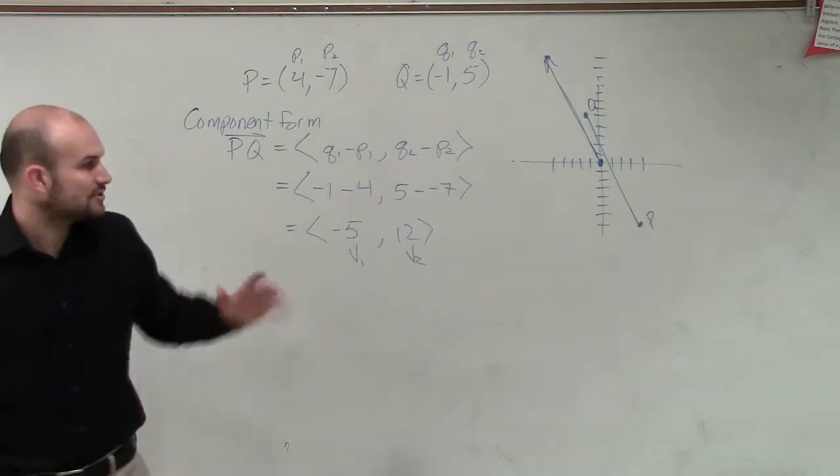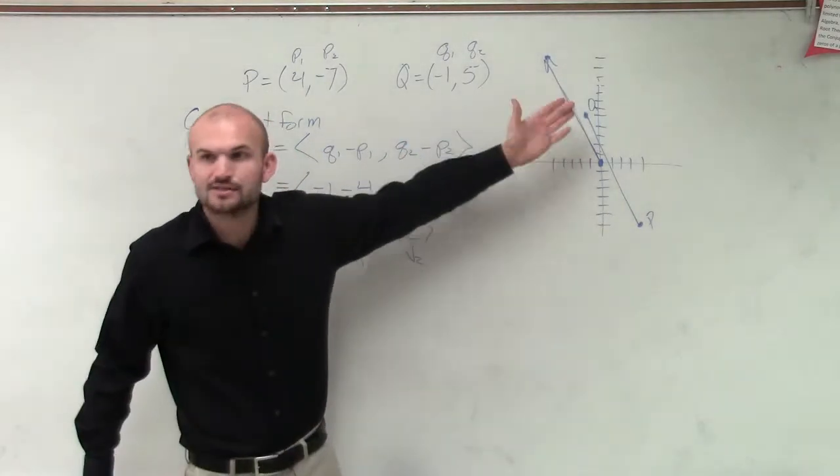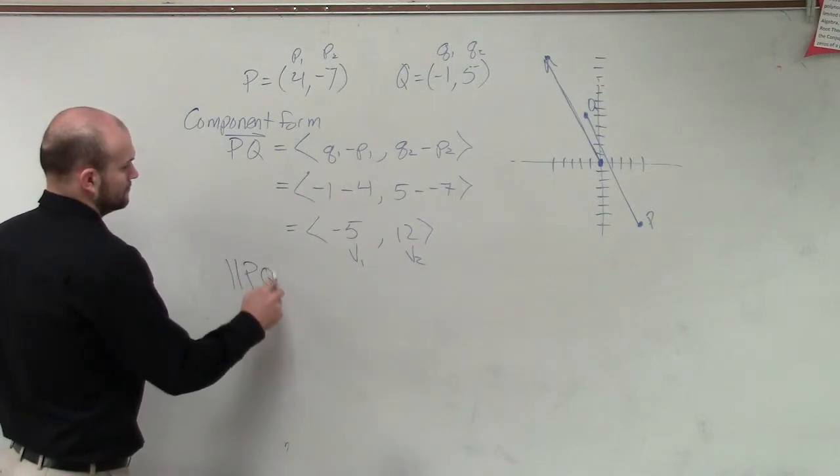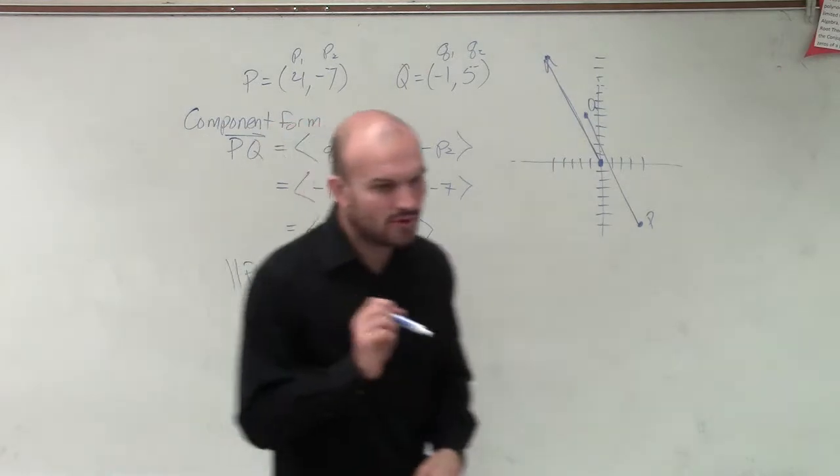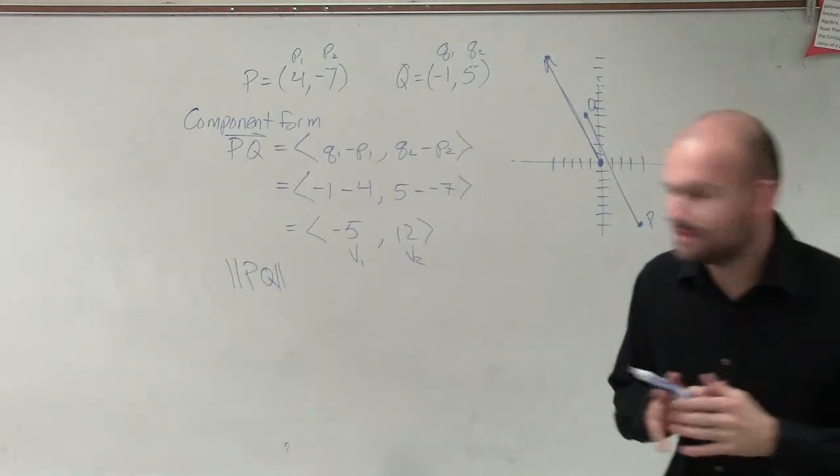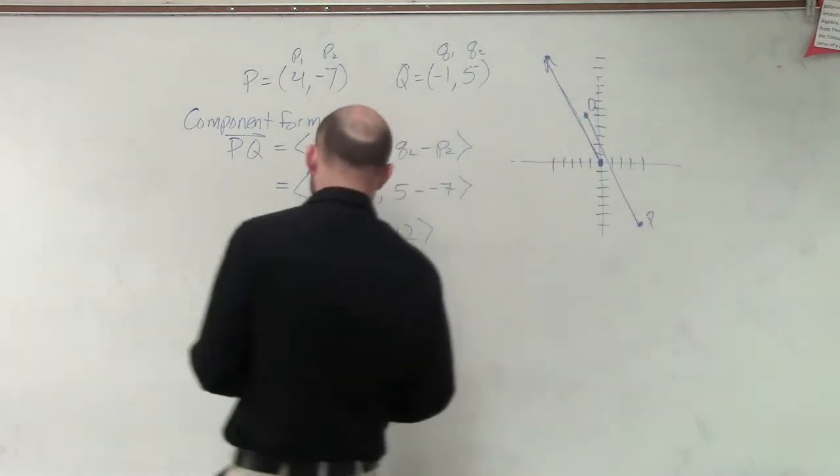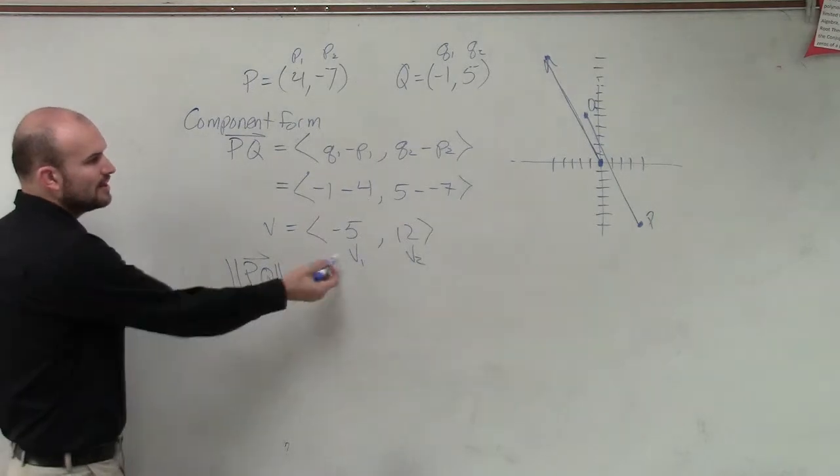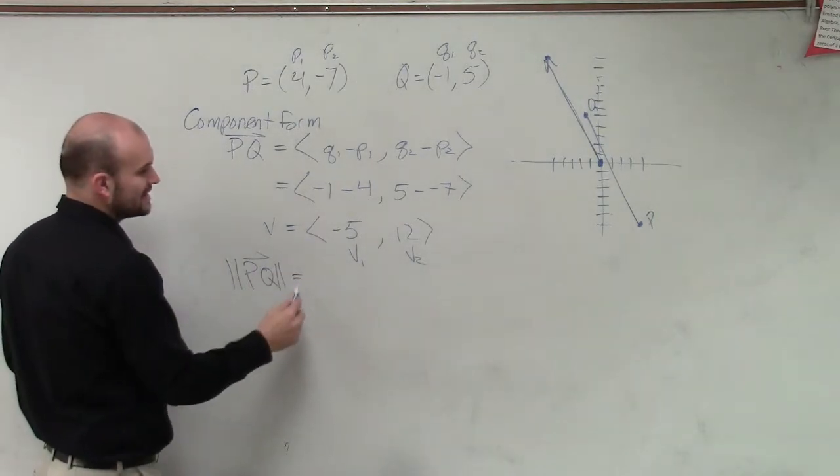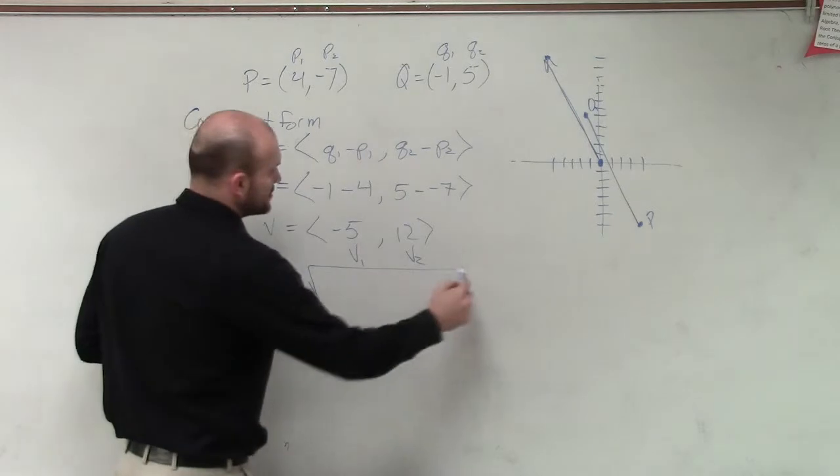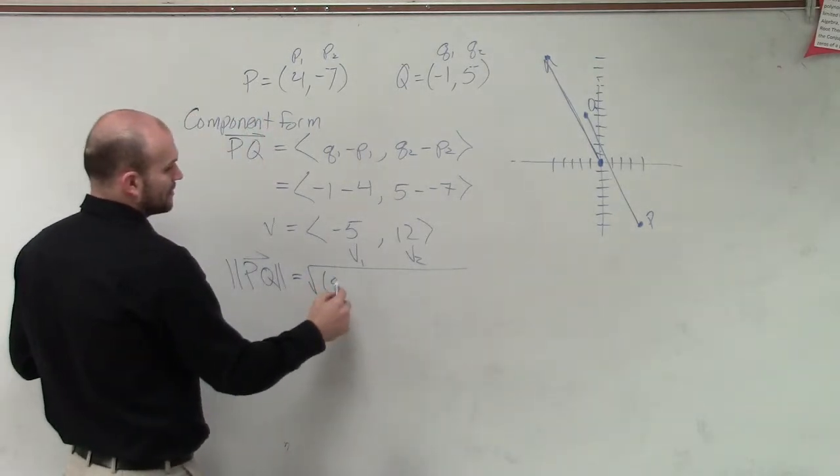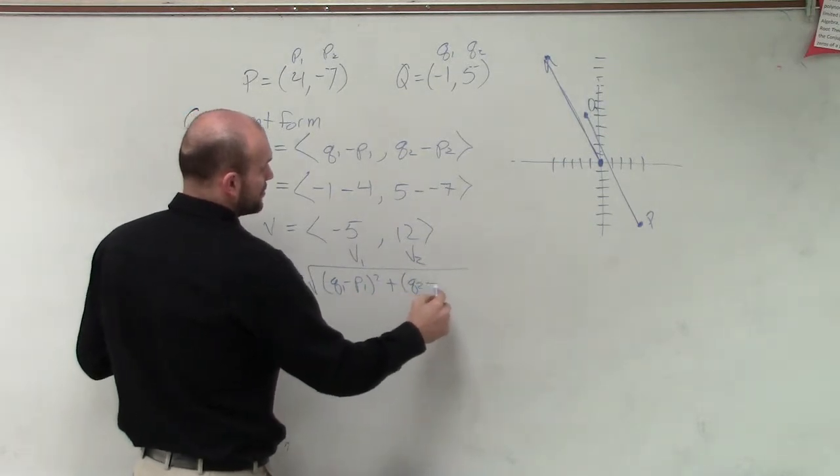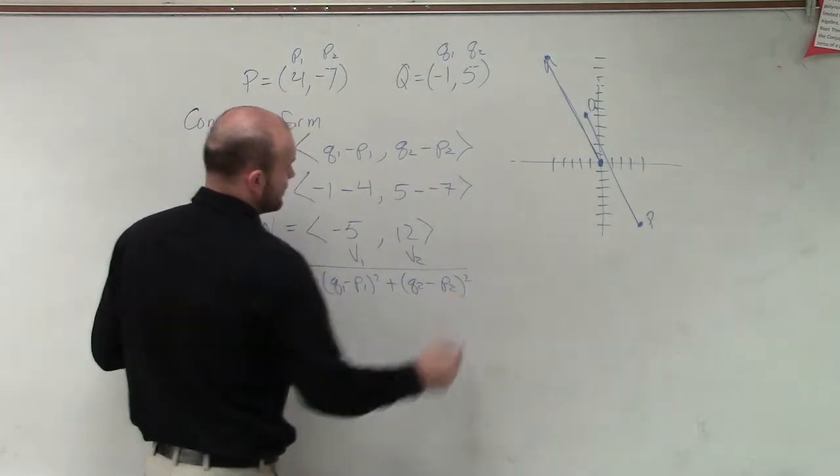So now let's take a look at the magnitude. We want to find this distance, so we need to use the distance formula. When I want to find the magnitude of my vector V, the magnitude is going to be the square root of Q1 minus P1 squared plus Q2 minus P2 squared.